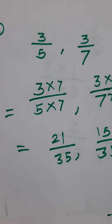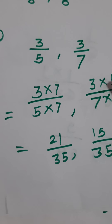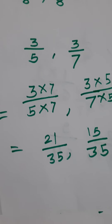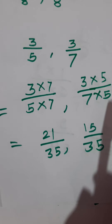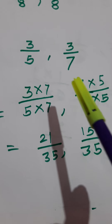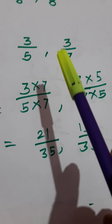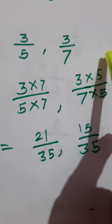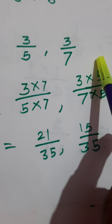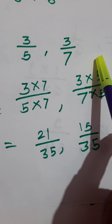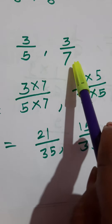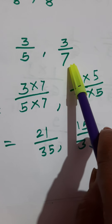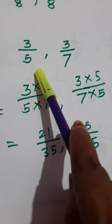Hello dear students, let's see how to convert fractions into like fractions. First you must know what is meant by like fractions. When the denominators are the same, equal, they are called like fractions. And when the denominators are different, they are called unlike fractions.